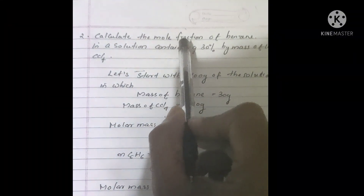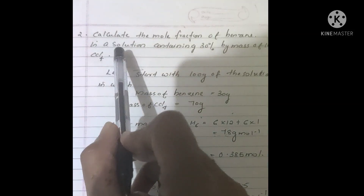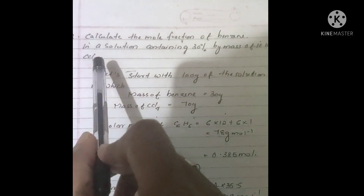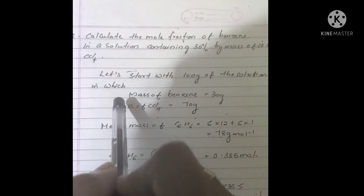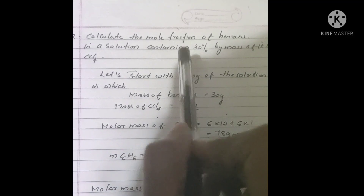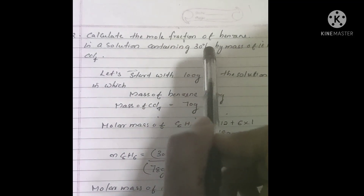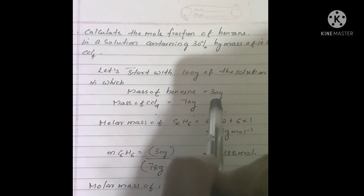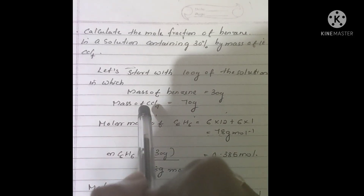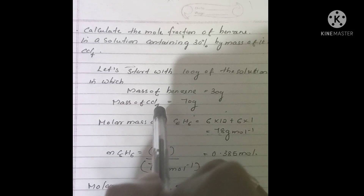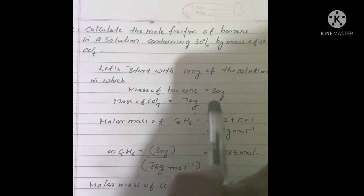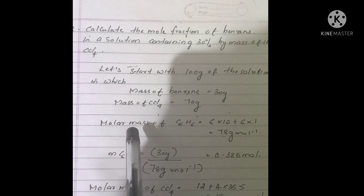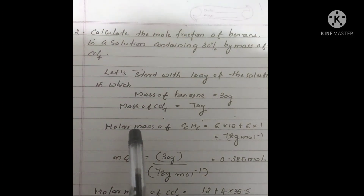Next problem: Calculate the mole fraction of benzene in a solution containing 30% by mass of it in carbon tetrachloride. We have to calculate the mole fraction of benzene. Let us start with 100 grams of the solution, in which mass of benzene is 30 grams. Then mass of carbon tetrachloride equals 100 minus 30, which equals 70 grams.